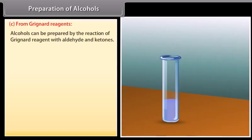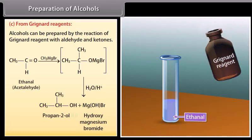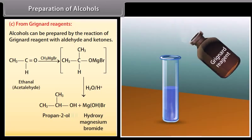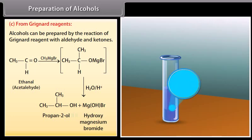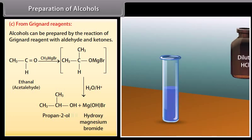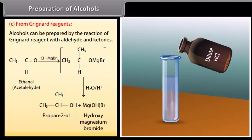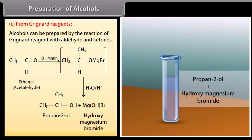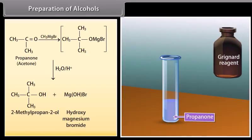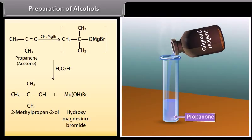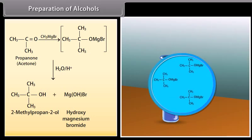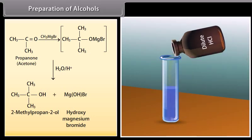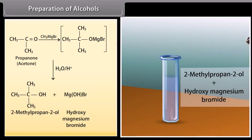Preparation of alcohols from Grignard reagents: alcohols can be prepared by the reaction of Grignard reagents with aldehydes and ketones. A Grignard reagent reacts with ethanal to form a product which decomposes with dilute HCl to give propan-2-ol and hydroxymagnesium bromide. A Grignard reagent reacts with propanone to form a product which decomposes with dilute HCl to give 2-methylpropan-2-ol and hydroxymagnesium bromide.